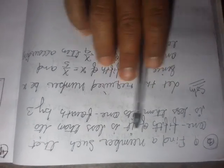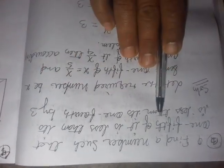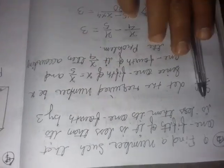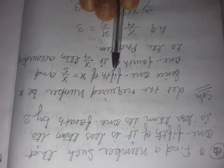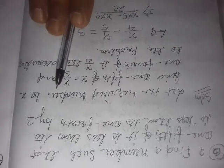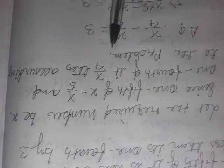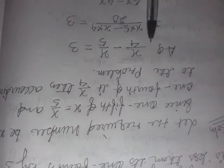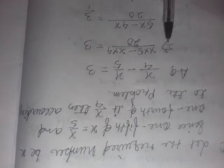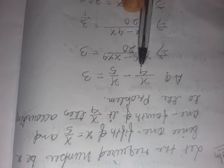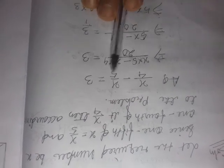Find a number such that one-fourth of it less one-fifth of it equals 3. Let the required number be x. One-fifth of x equals x by 5, and one-fourth of x equals x by 4. According to the problem, x by 4 minus x by 5 equals 3. Now we take the LCM.